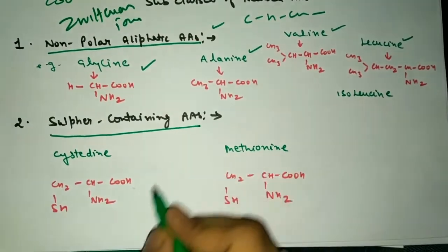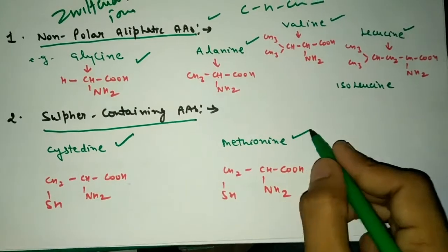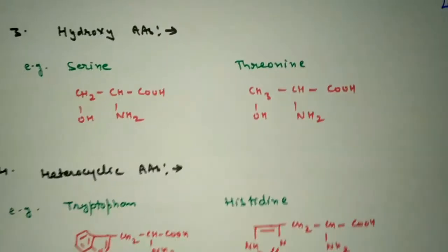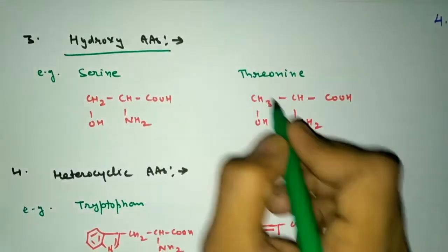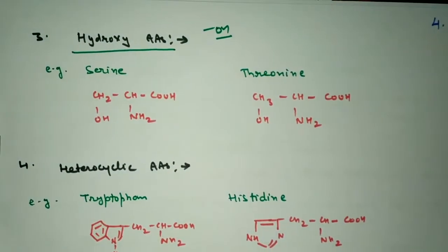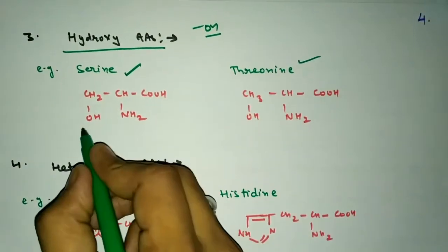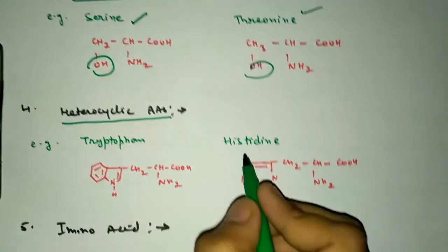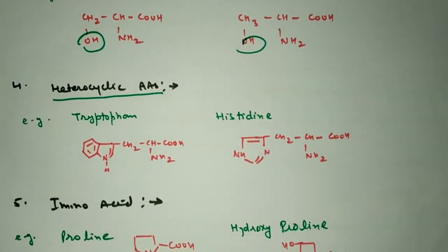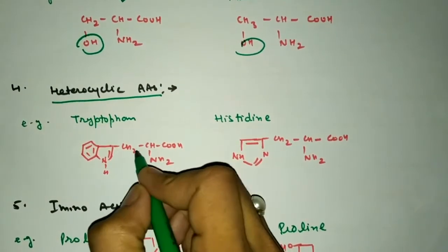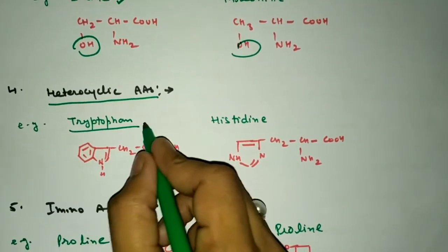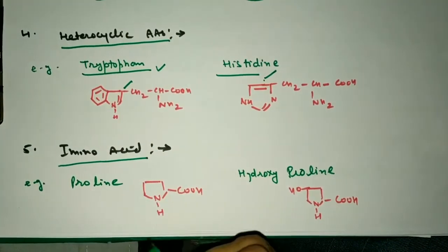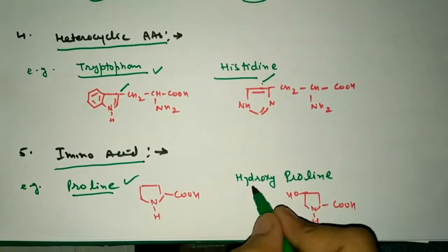Next are the sulfur-containing amino acids: cysteine and methionine, which have a sulfide bond in their structure. Then we have the hydroxy amino acids containing an OH (alcoholic) group — these are serine and threonine. Next, the heterocyclic amino acids contain a cyclic structure but do not have the 6 pi-electron aromatic configuration; they are heterocyclic. These are tryptophan and histidine. Amino acids containing an imino group are proline and hydroxyproline, where the NH group is called the imino group.